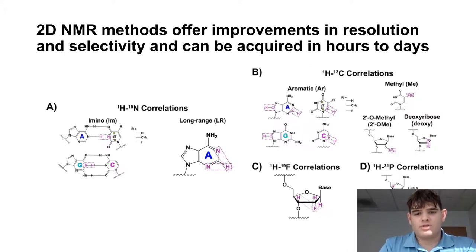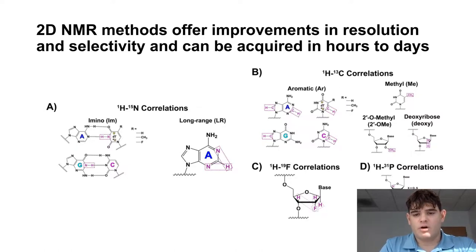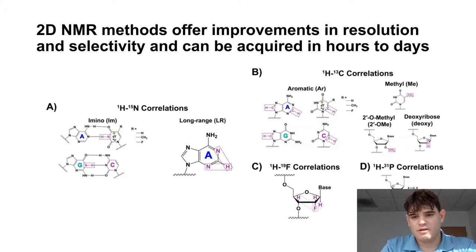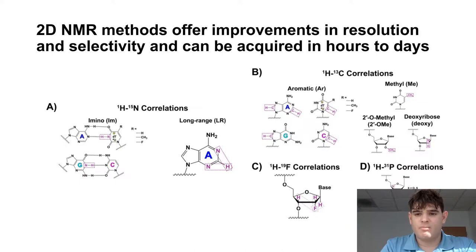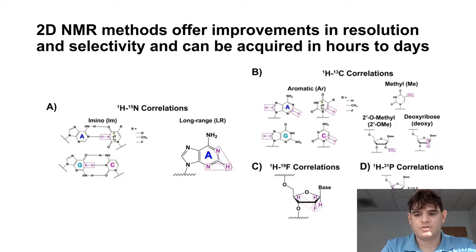In conclusion, the 2D NMR methods offer improvements in resolution and selectivity, but at the cost of longer experiment times. The proton-nitrogen correlations tend to take around half a day to one and a half days. The proton-carbon correlations can be acquired in as little as an hour for the 2'-O-methyl region and as long as four hours for the aromatic region. The fluorine-proton correlations take around four to eight hours, and similarly for the proton-phosphorus correlations.